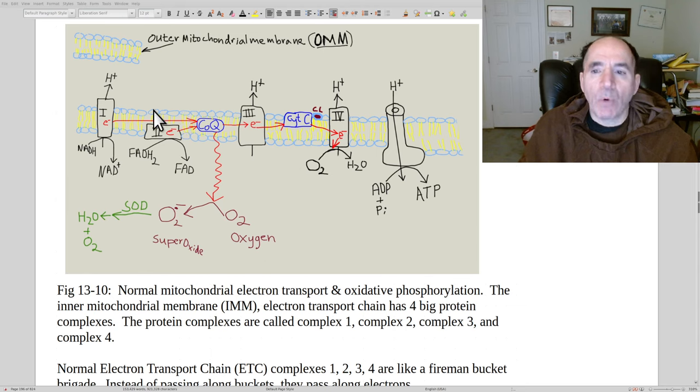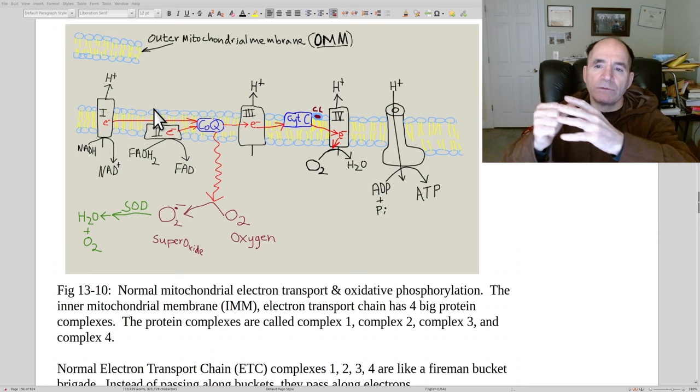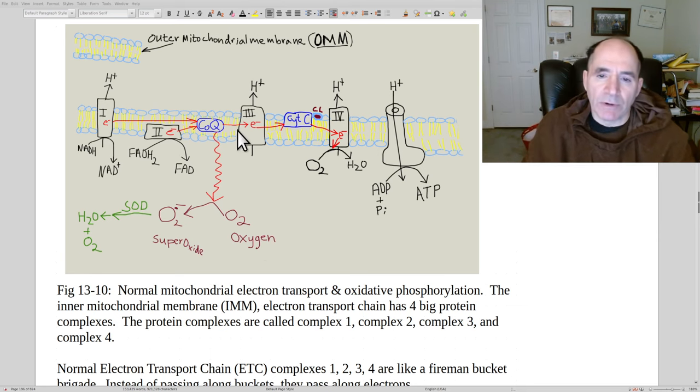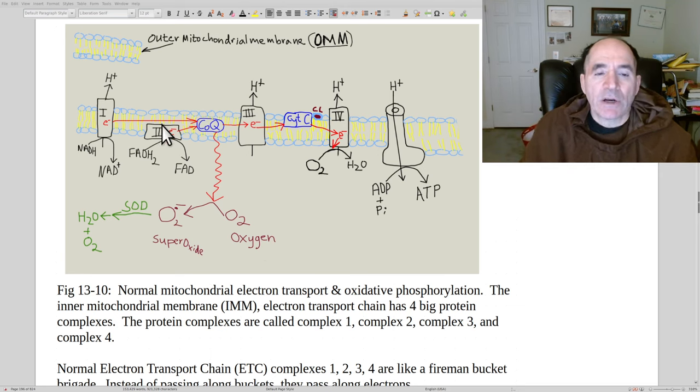The energy acquired by letting this snowball roll down a hill, sending the electron to more aggressive grabbers with higher affinity, generates energy that's used to pump protons H+ into the intramembranous space. That's the space between the outer mitochondrial membrane OMM and inner mitochondrial membrane IMM. When you pump all these protons into the space, they're pumped in under pressure.